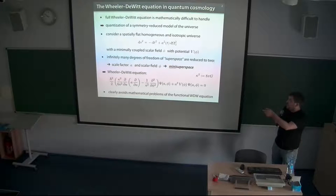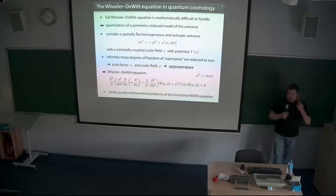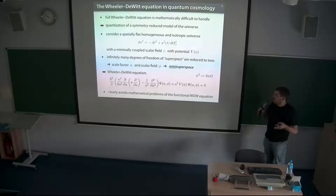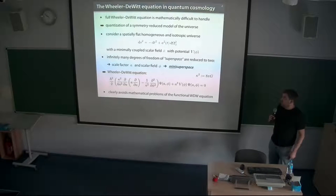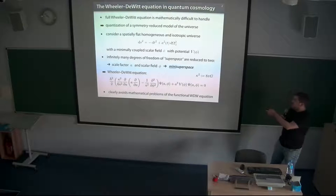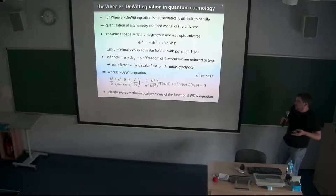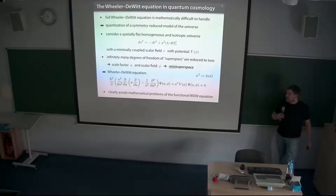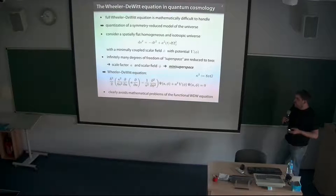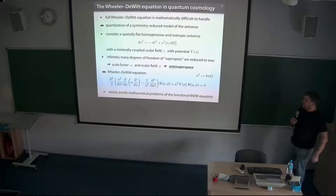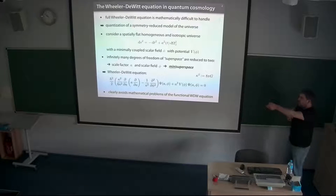The thing is, if you have the full Wheeler-DeWitt equation with the functional derivatives and so on, it's extremely difficult to do something with it — to calculate or to find a solution in the general case. But if you go to a symmetry-reduced model, for example of the universe, then this equation becomes much more manageable. Usually one uses a spatially flat, homogeneous, and isotropic universe with this symmetry. And in general, in quantum cosmology, one introduces a scalar field with some potential phi.